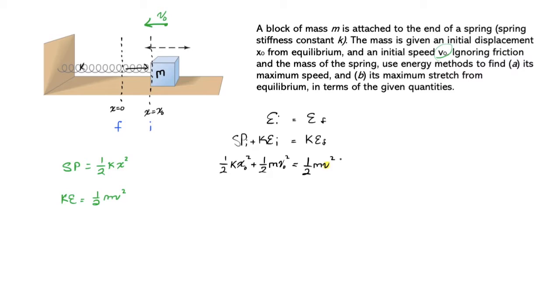All that's left to do is to isolate that v. We can cross out all of our 1/2s, because they are shared among all the terms and on both sides, and we have k x naught squared plus m v naught squared is equal to m v.